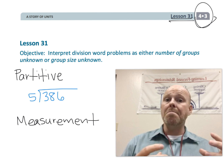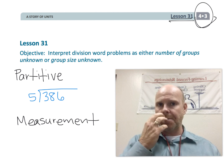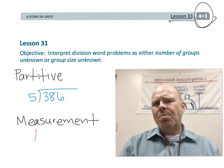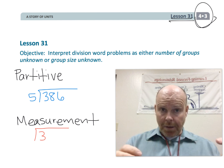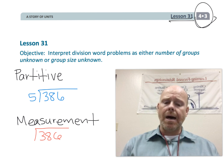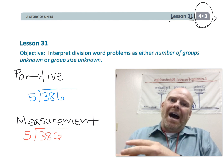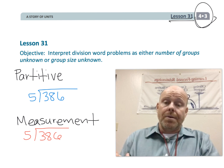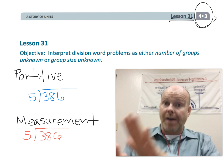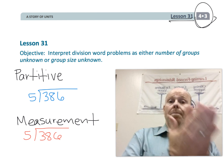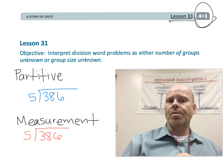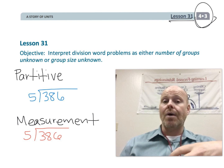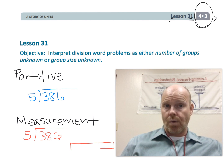The other one is called the measurement method of thinking about division. That's where you have a number that's your dividend, and when you're dividing by five, what you're saying is each group has a size of five. We want to know how many fives are in this, so the size of the group is known — now you're trying to figure out how many groups there are going to be.